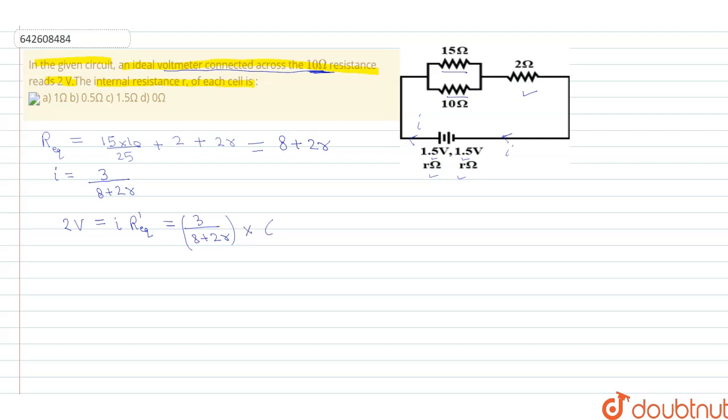which is equal to 6 ohm resistance. So we have the expression 2 is equal to 3 upon 8 plus 2r into 6. On cancelling this, we have 2 is cancelled out with 3.